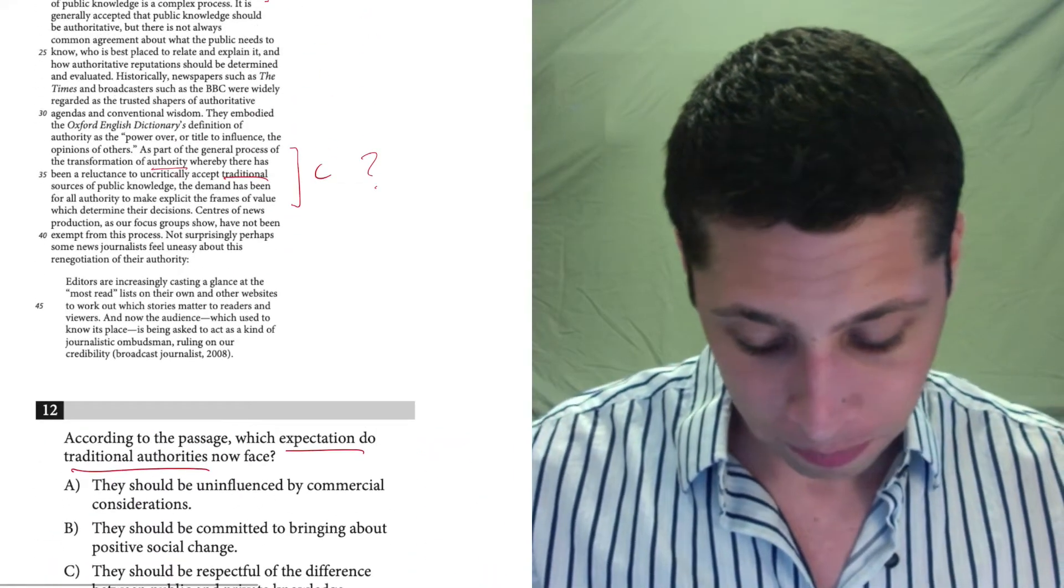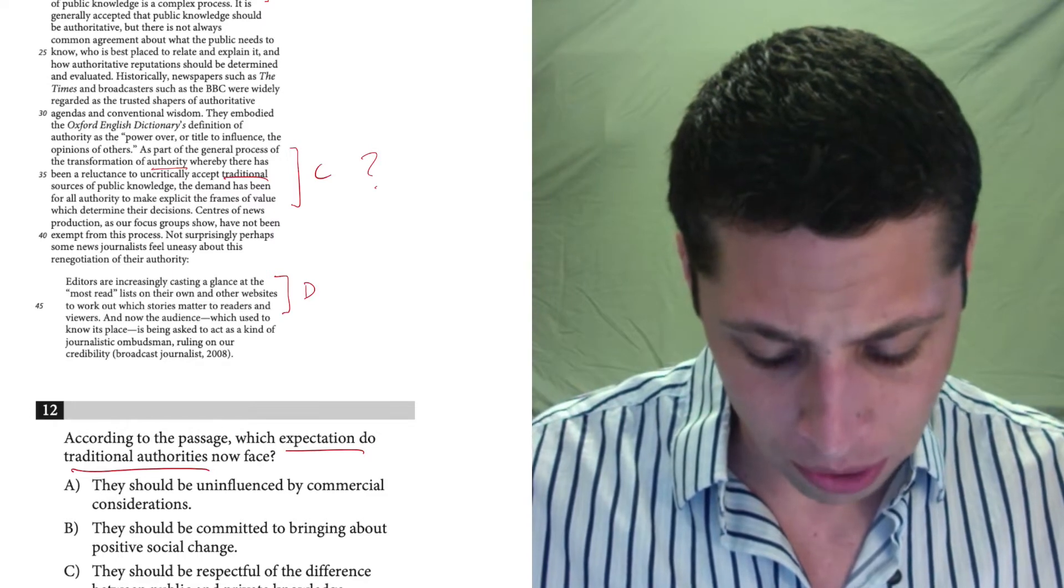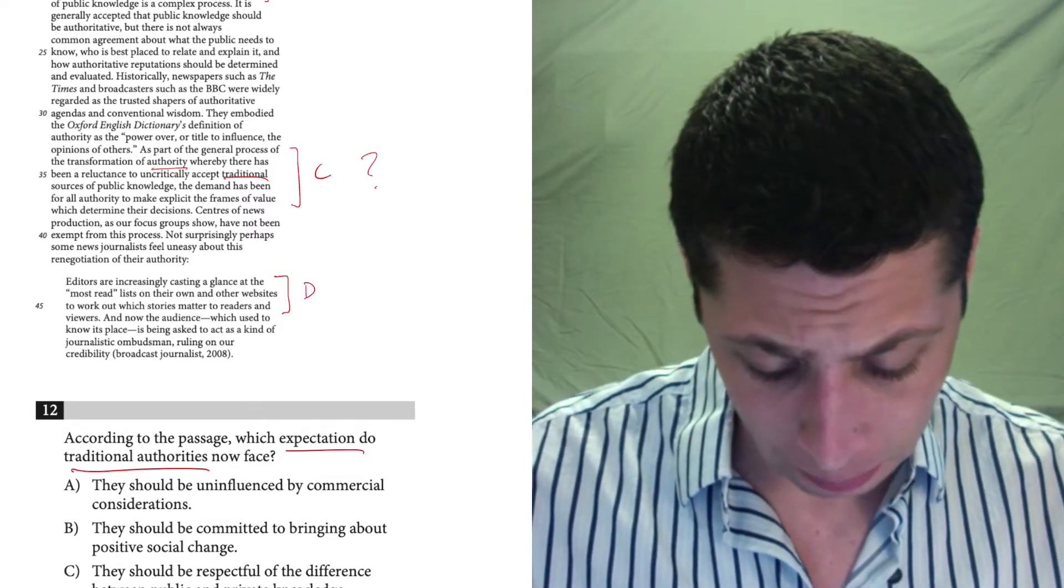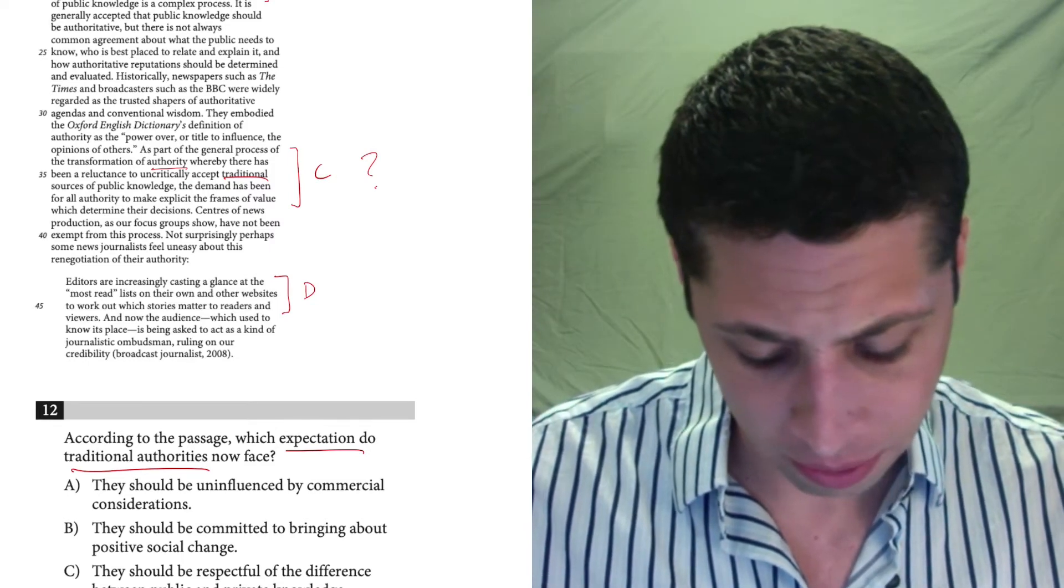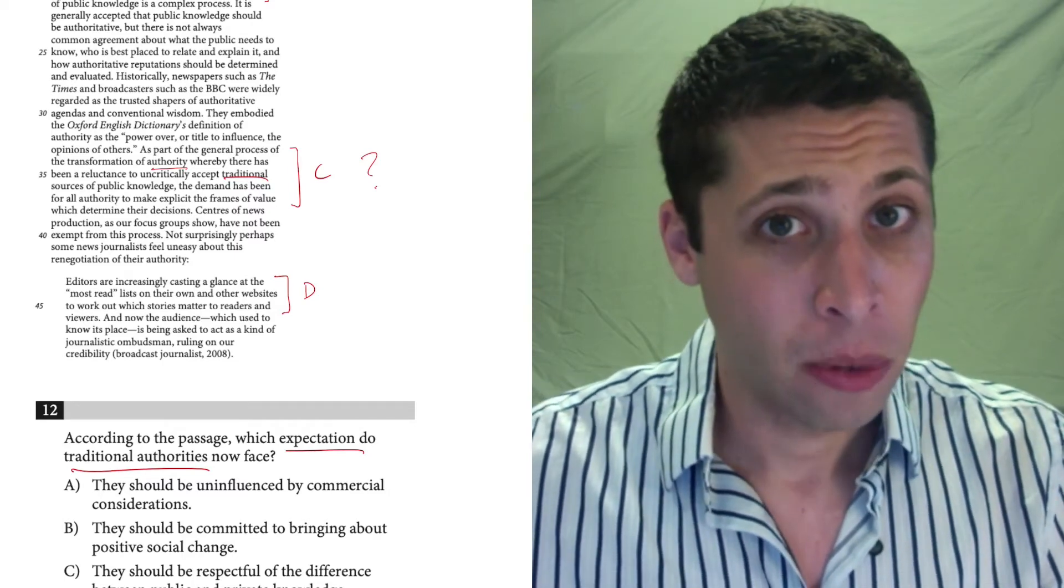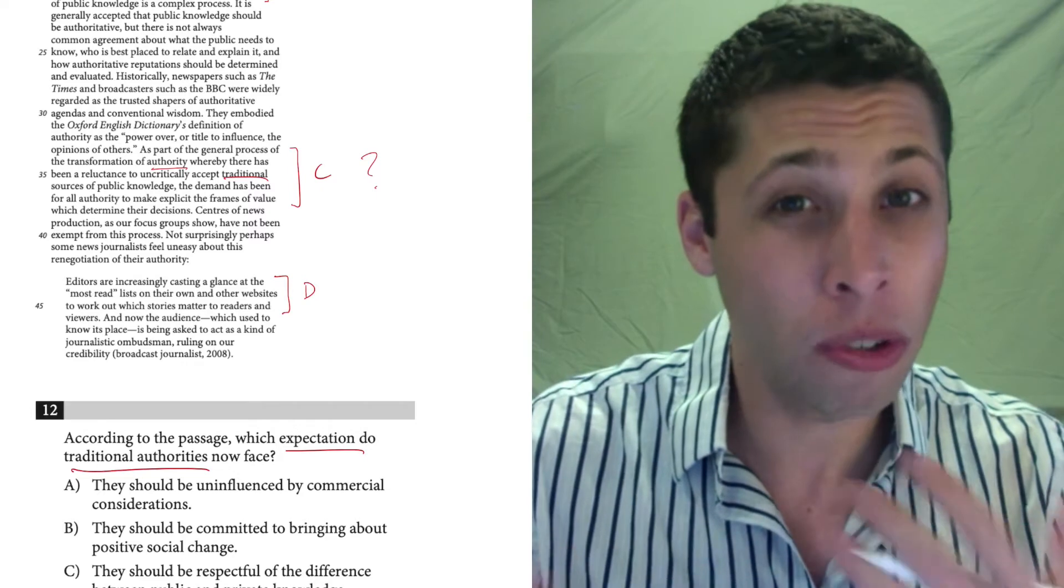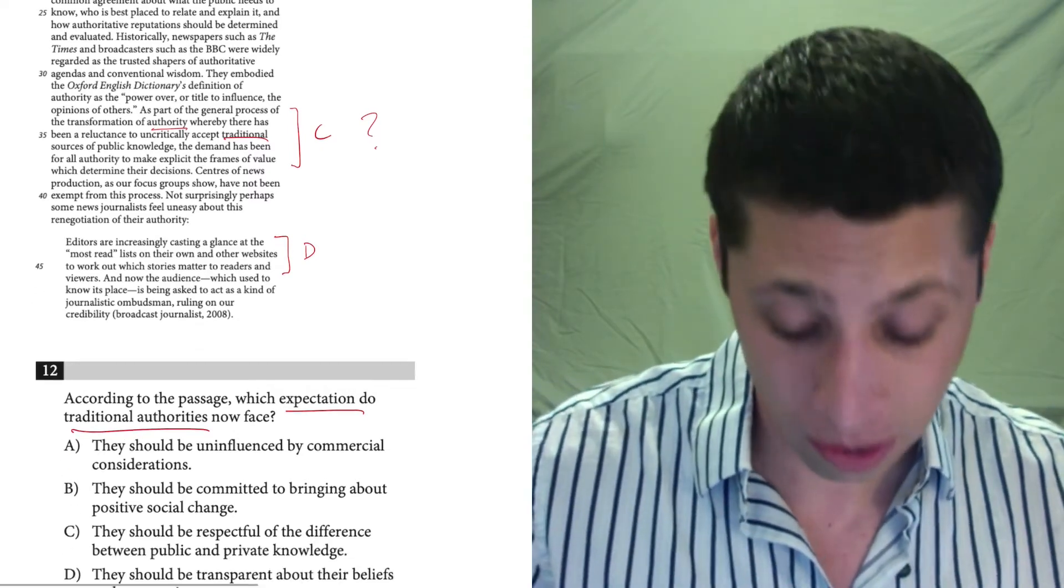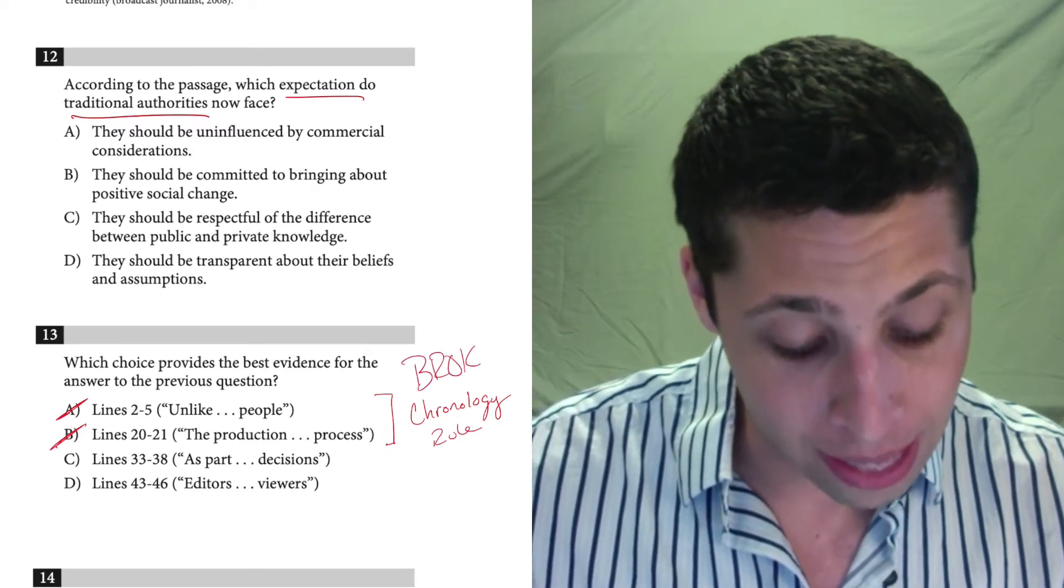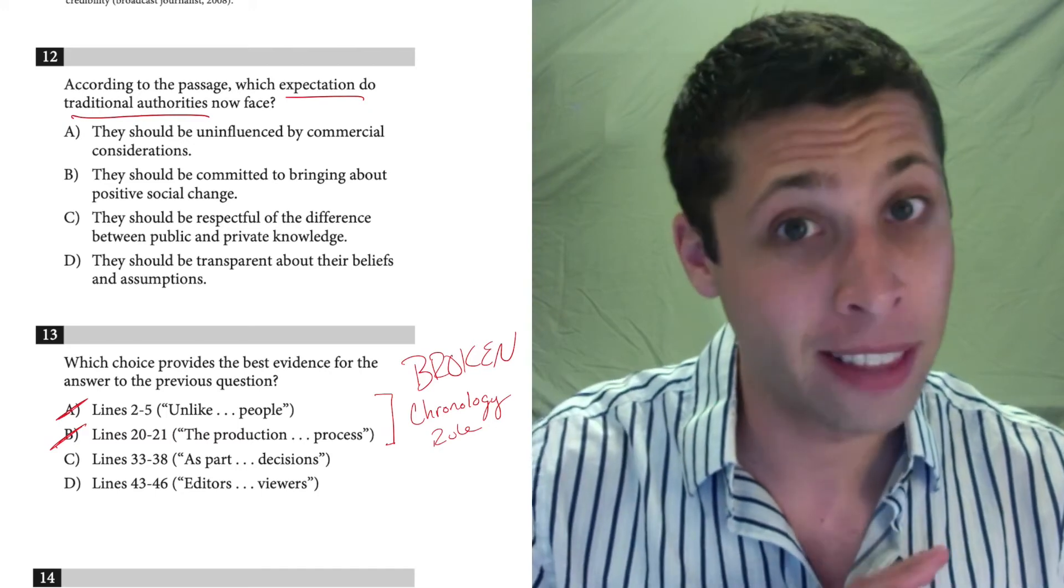So line reference D, 43 to 46, that's in the middle of this quote here. It says editors are increasingly casting a glance at the most read lists on their own and other websites to work out which stories matter to readers and viewers. Okay, well, maybe editors are traditional authorities and maybe their expectation is that they have to look at other websites. I really don't know. Again, I don't have a good sense of what this is really about, but it seems like maybe I could make it fit. Whereas choices A and B weren't about people at all. They were just general statements about public and private knowledge. So hopefully you see that difference. It's tricky. These are a hard pair of questions. But I'd be pretty confident that it's going to be either C or D and that the chronology rule is broken in this particular case. It happens. It's rare. If you go through the rest of this test, it does not happen much more. I think maybe one other time. But that's it. So it's a pretty consistent rule.